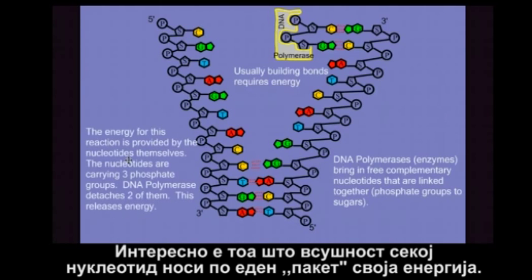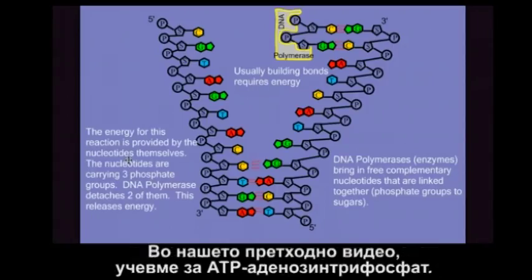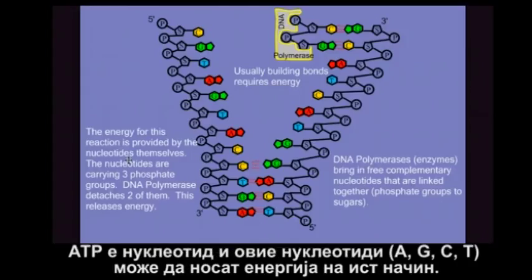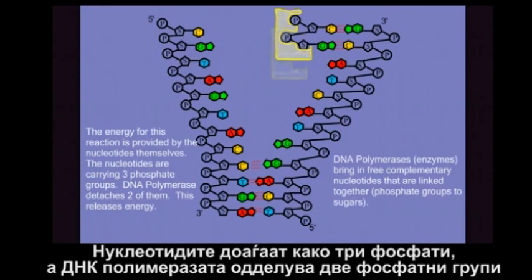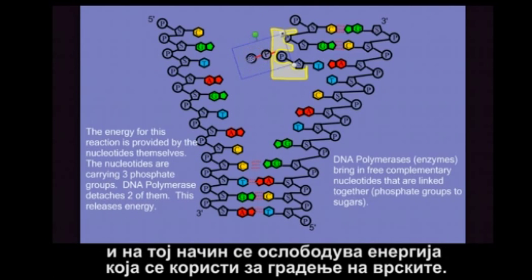Each nucleotide is bringing in its own little packet of energy. In an earlier video, we learned about ATP, or adenosine triphosphate, the cell's energy currency. ATP is a nucleotide, and these nucleotides — adenine, thymine, guanine, cytosine — can carry energy in the same way. The nucleotides come in as triphosphates, and DNA polymerase helps remove two of these phosphate groups. In doing so, it releases energy, and that energy is used to help build the bond between nucleotides.